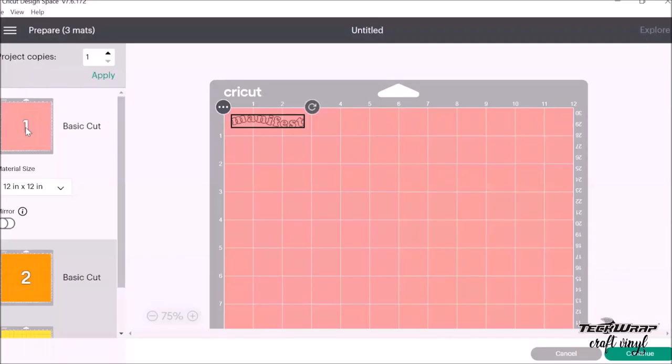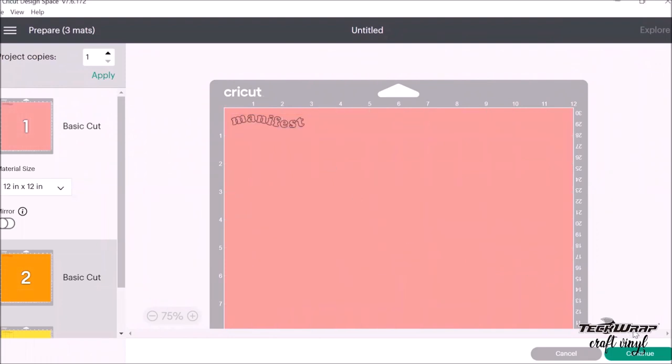Then press the Make It button and you will see that the machine will cut three times since you assign different colors for each text. Since I want to make the cutting simpler and easier, even though I'm going to use three different vinyl colors, I'll go back to my canvas and set all the text in one color only.